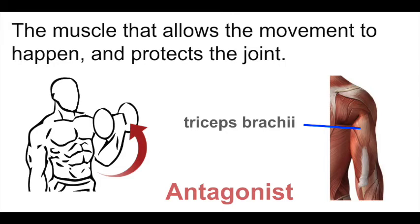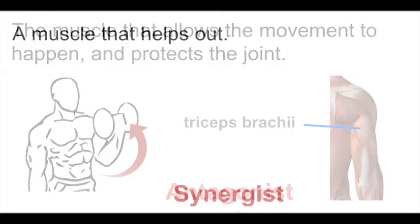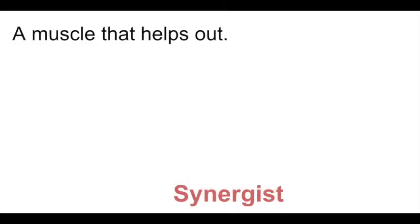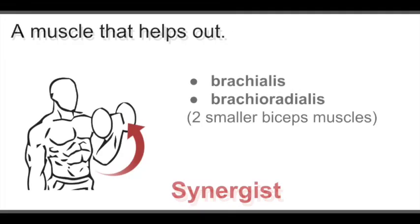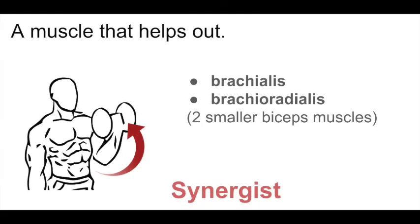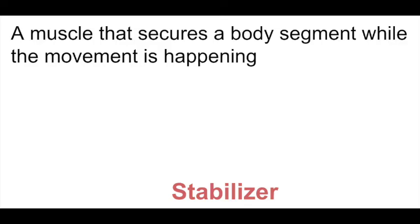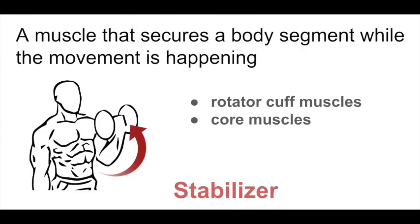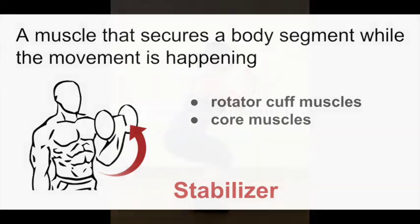A synergist is the muscle that's helping out — it's not working as hard as the agonist. For example, two smaller biceps muscles, brachialis and brachioradialis, are the synergists during the biceps curl. A stabilizer helps secure a joint or body segment while the movement is happening. During the biceps curl, the rotator cuff muscles are stabilizing the shoulder girdle, and the core muscles are stabilizing the spine and pelvis.